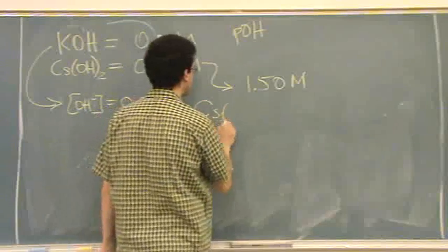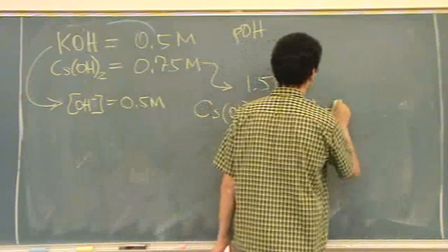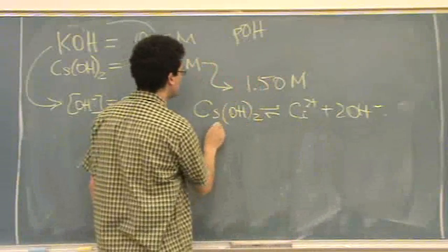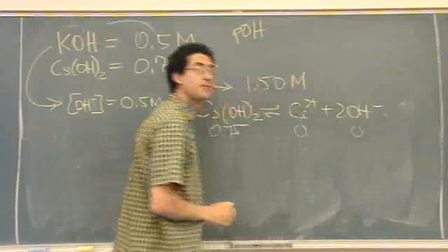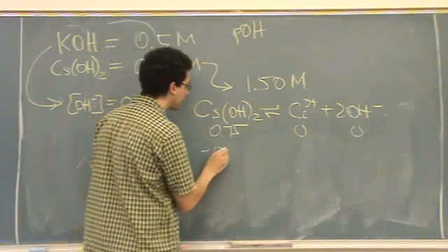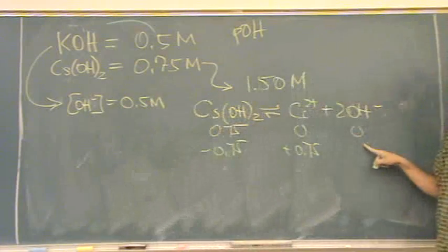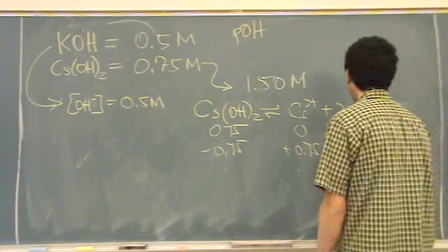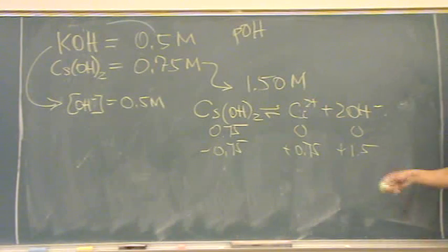If you want to write out the reaction, you can. So this is 0.75, 0, 0. Then you go minus 0.75, plus 0.75. And then this is like a plus 2x because there's a two coefficient, plus 1.5. So that's the 1.5. You've got to remember to double that.